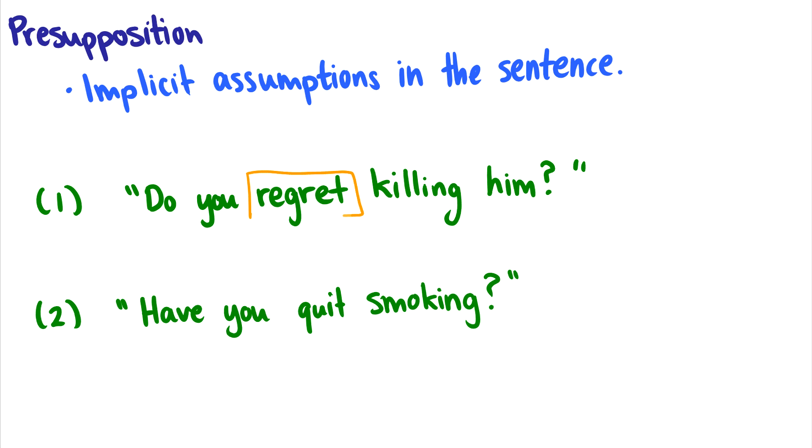That's because this word regret presupposes that you've already done something. So this is a presupposition. So because I say, do you regret killing him? I'm assuming that you've already killed him. So this assumption is you've done it already.